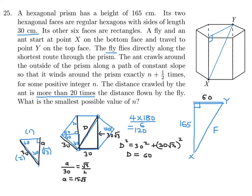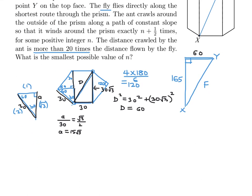Now we can solve for f, the fly's distance: f squared equals 60 squared plus 165 squared, giving f equals 15√137. So the fly's distance is 15√137.